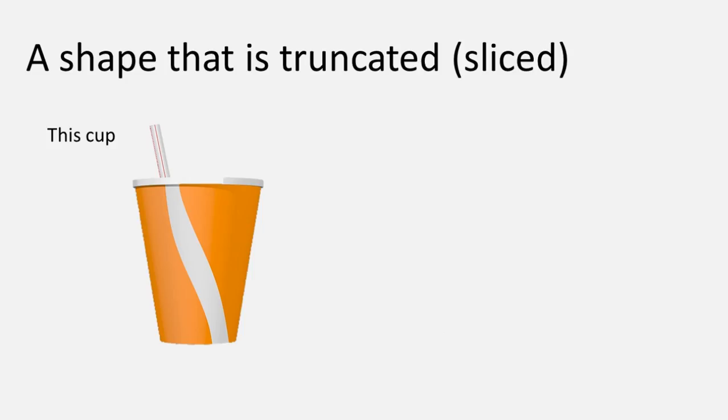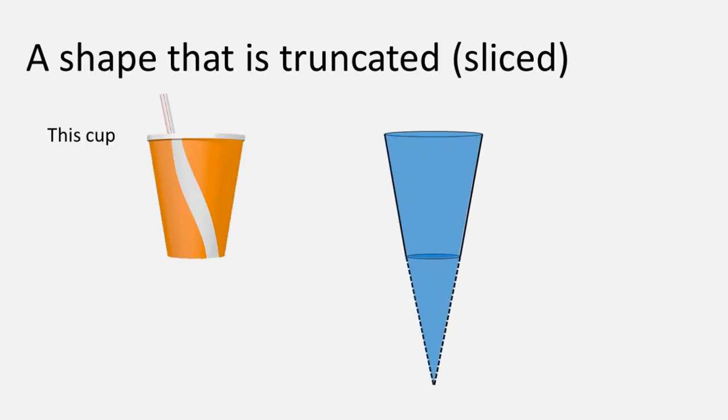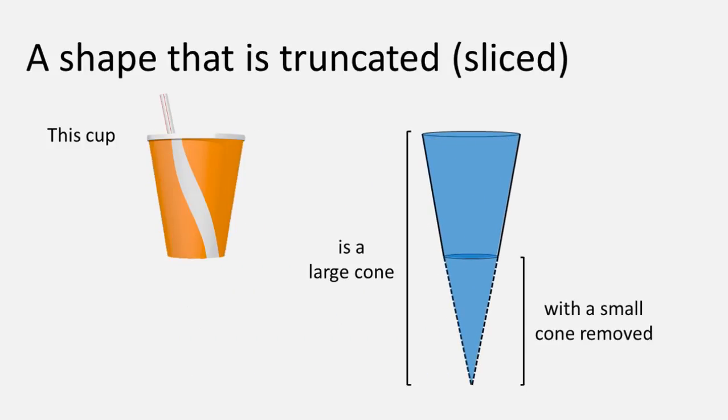These shapes can also be shapes that have been truncated, and this means that one section has been removed. This cup is actually a large cone with a small cone removed.